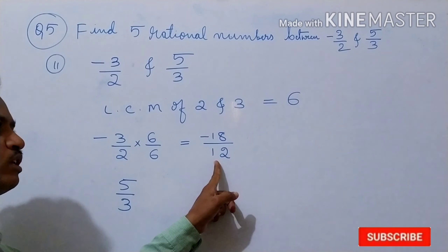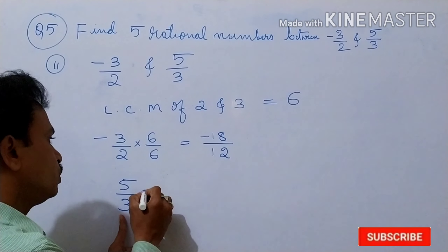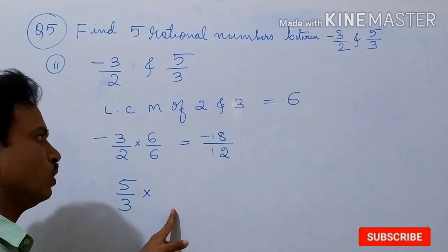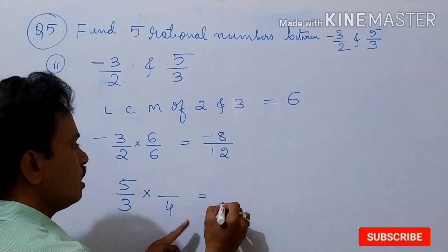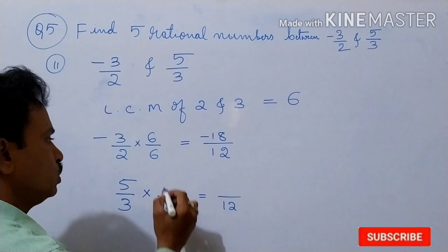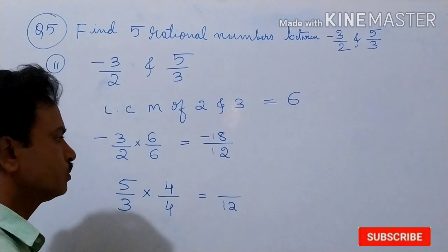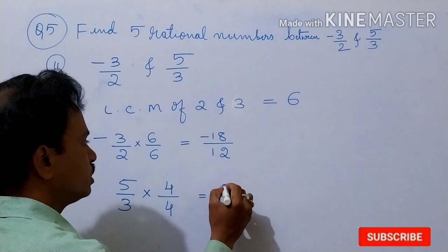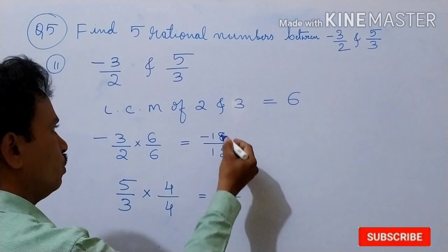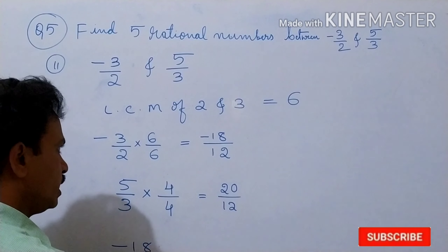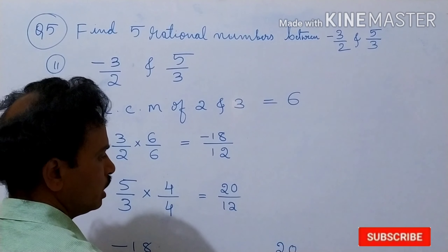Now for 5 by 3, we want the denominator the same. Here 3 is the denominator. What should we take to get denominator 12? 3 times 4 is 12. So multiply by 4 and divide by 4 — same number. 5 times 4 is 20. So we get minus 18 by 12 and 20 by 12.